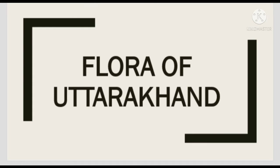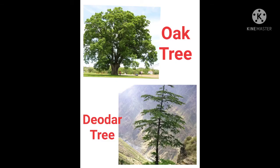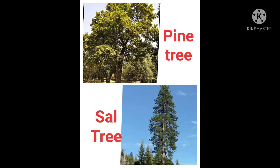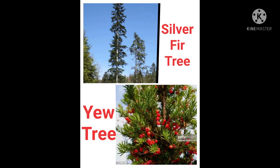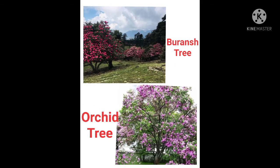Let us see some flora species of Uttarakhand. Oak tree, Deodar tree, Pine tree, and Sal tree are the most common trees of Uttarakhand. Silver Fir tree, Yew tree, Buran tree, and Orchid tree are also commonly found flowering trees of Uttarakhand.